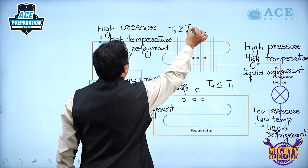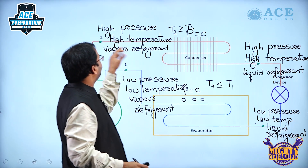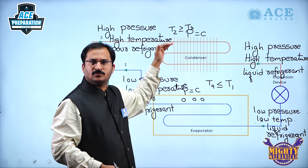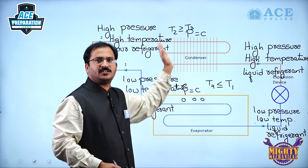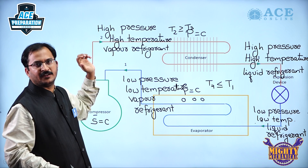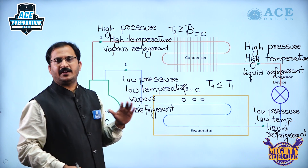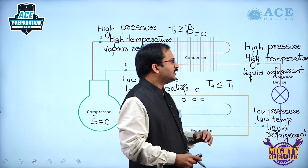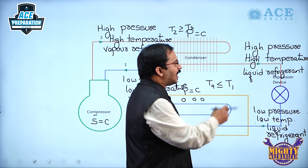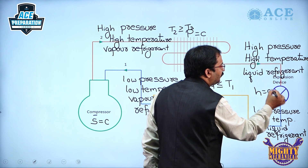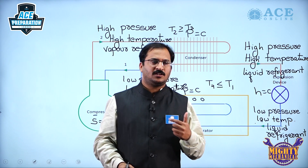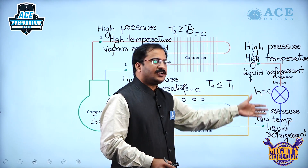T2 will be greater than or equal to T3 because the condition entering the condenser may be superheated. From the superheated state to the saturation state the temperature drops, and at the saturation temperature phase change takes place. In the expansion device, high pressure high temperature liquid refrigerant gets converted into low pressure low temperature liquid refrigerant, and during this expansion enthalpy remains constant — this is throttling. There is a drop in pressure and temperature, and it is considered an irreversible process.